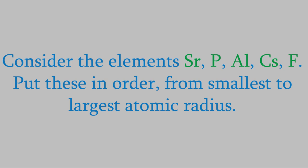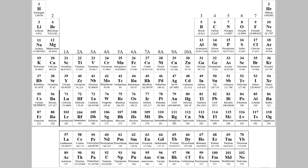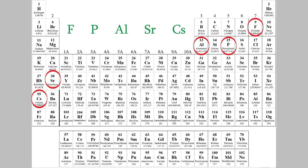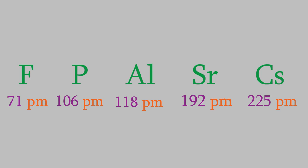So let's try an example. Suppose we have atoms of strontium, phosphorus, aluminum, cesium, and fluorine. Let's put these in order from smallest radius to largest. The first thing we need to do is find each of these on the periodic table. Now that we've done that, we just need to remember that the atoms get larger as we go down and to the left. So fluorine is the smallest, and then phosphorus, then aluminum, then strontium, and cesium is the largest. And we find that the actual data confirms it. Of these five, fluorine is the smallest at 71 picometers, and cesium is the largest at 225 picometers.